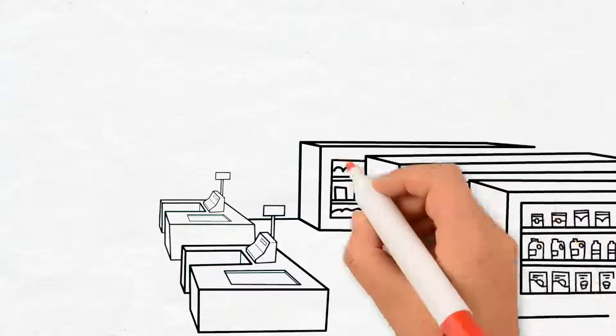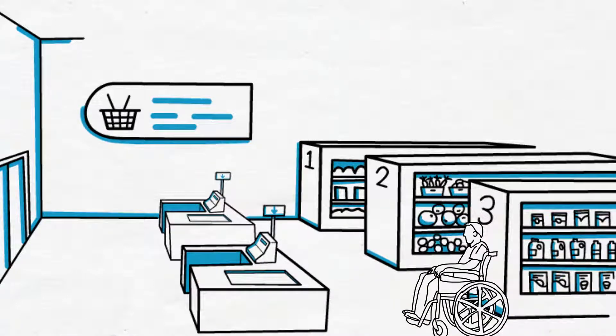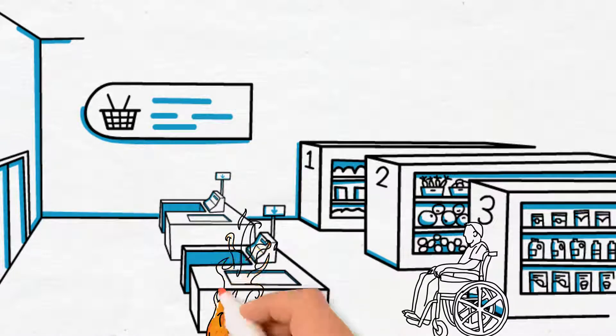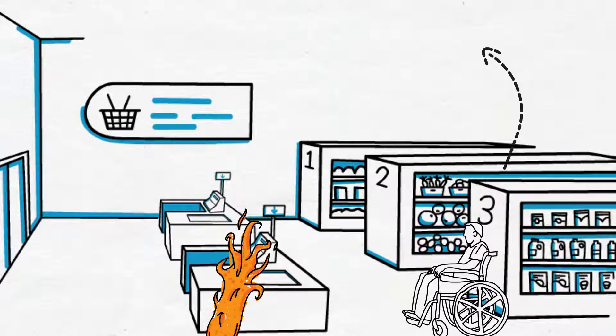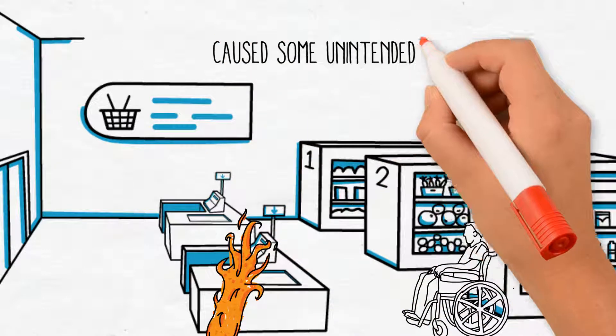This could be something like a customer being injured during a slip in the aisle of your store, or one of your employees putting up drywall and damaging a wire that later causes a fire. Or maybe the product you manufactured or the food you prepared for your customer caused some unintended harm.